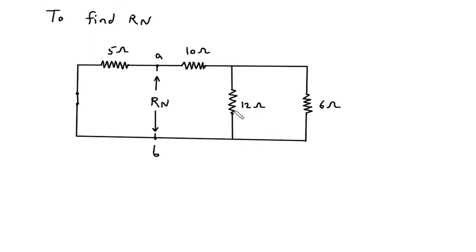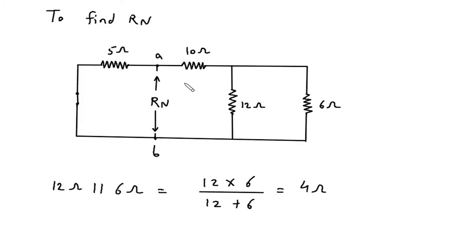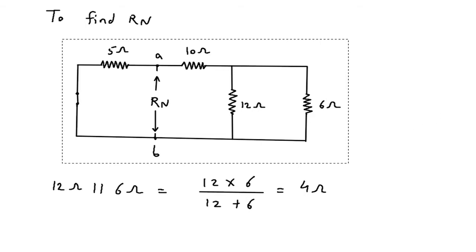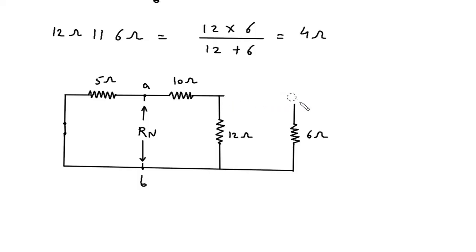Here we can see this 12 ohm and this 6 ohm are connected in parallel. So 12 ohm parallel with 6 ohm gives us 12 times 6 divided by 12 plus 6, which equals 4 ohm. So we can replace these two resistors with a single 4 ohm resistor.